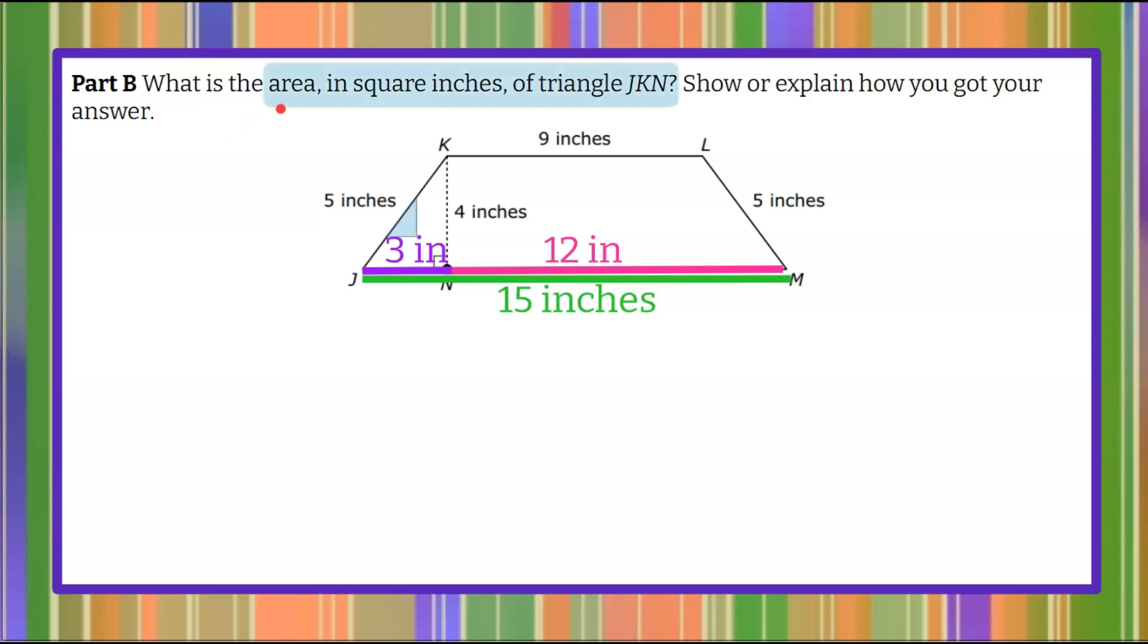So we're going to find the area in square inches of triangle JKN. The formula for area of a triangle is area equals one-half multiplied by its base multiplied by its height. So we're going to identify the base which we just found right here. It was given in the problem is 3 and the height of the triangle is always perpendicular to its base which they've labeled here as 4. So let's put those values in. Our base right here is 3 and our height is 4.